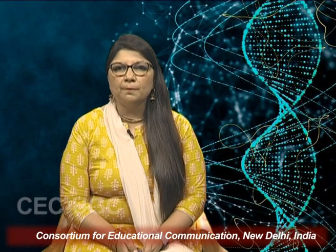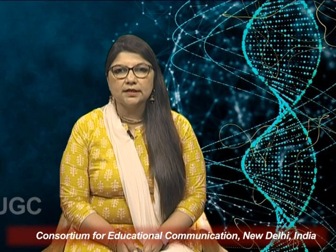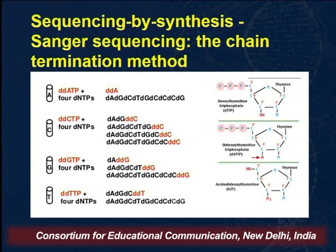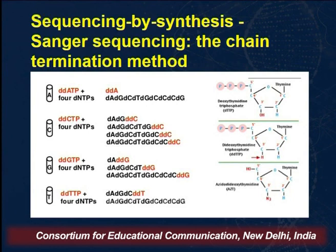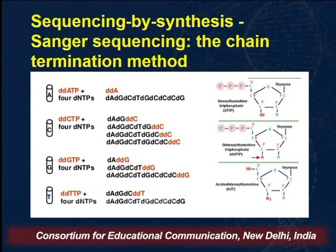Just to review the Sanger sequencing method: it is sequencing by synthesis, also termed the chain termination method. Nucleotides contain a nitrogenous base and a phosphate backbone. At the 3' end there is an OH group. When this OH is replaced by H, the chain can no longer be extended. During synthesis, DNA polymerase joins nucleotides by creating a phosphodiester bond between the 3' OH group and the 5' phosphate group of the incoming nucleotide. That is how synthesis occurs.